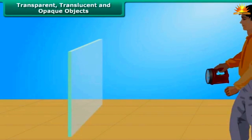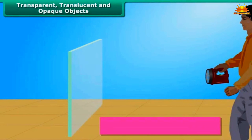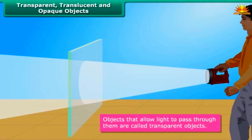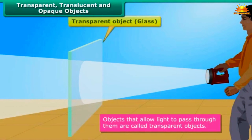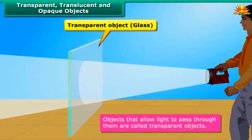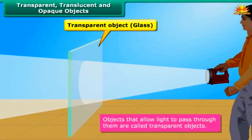Objects are classified as transparent, translucent, or opaque depending upon their treatment of light. Objects that allow light to pass through them are called transparent objects. Most of the light falling upon a transparent object passes through it to the other side, thereby allowing us to see through them. Glass, clean air, pure water, etc. are examples of transparent objects.